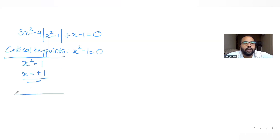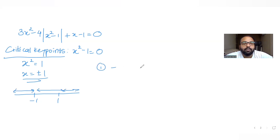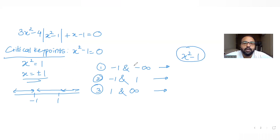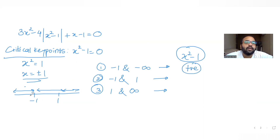If I plot that on the number line, I get -1 and 1, which divide the entire number line into three regions: the first region is from minus infinity to -1, the second is between -1 and 1, and the third goes from 1 to infinity. Now let's check the value of x² - 1 in all three cases, since that is the expression inside the mod.